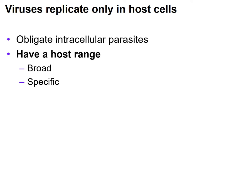Some viruses have a broad host range which allows them to infect many different types of species, perhaps infecting bacteria, plants, and animals. Some of them are very specific and may infect only animals, or only vertebrates, or even only a specific species of vertebrates.